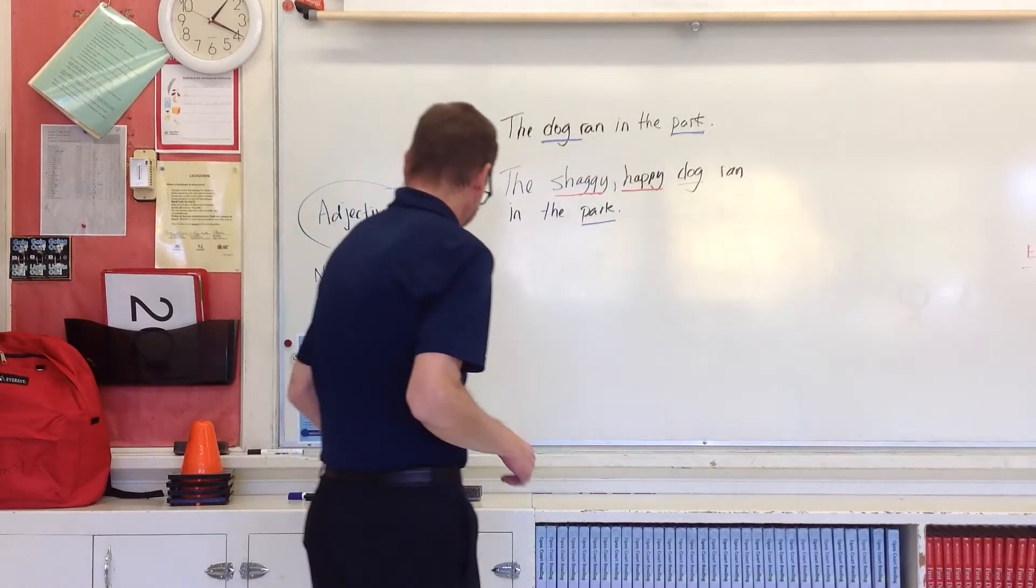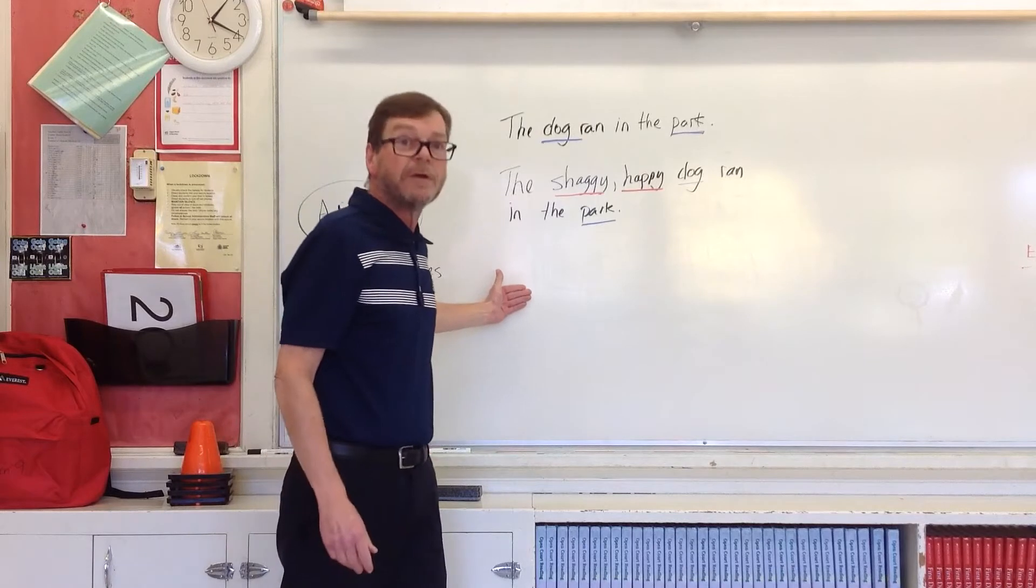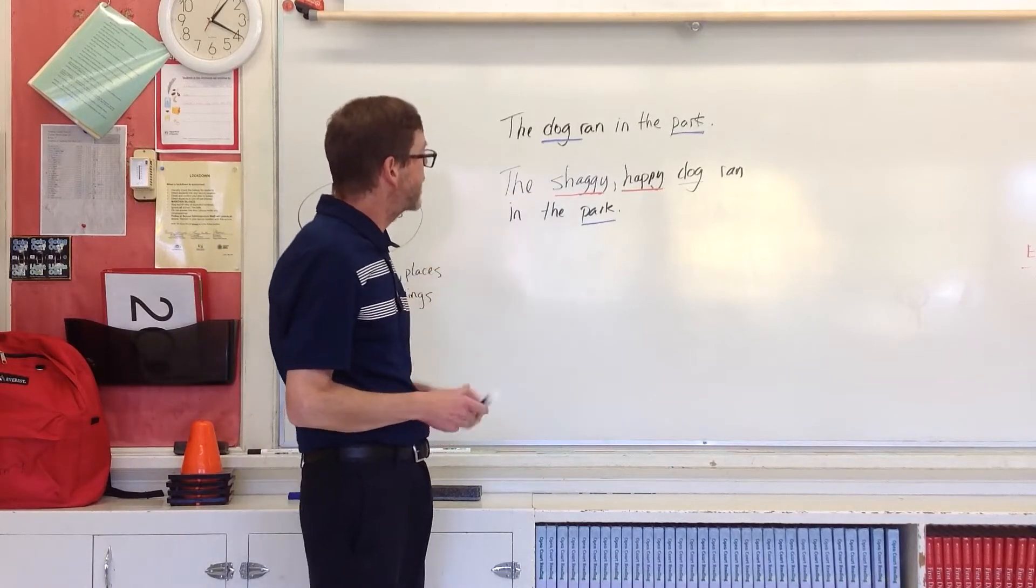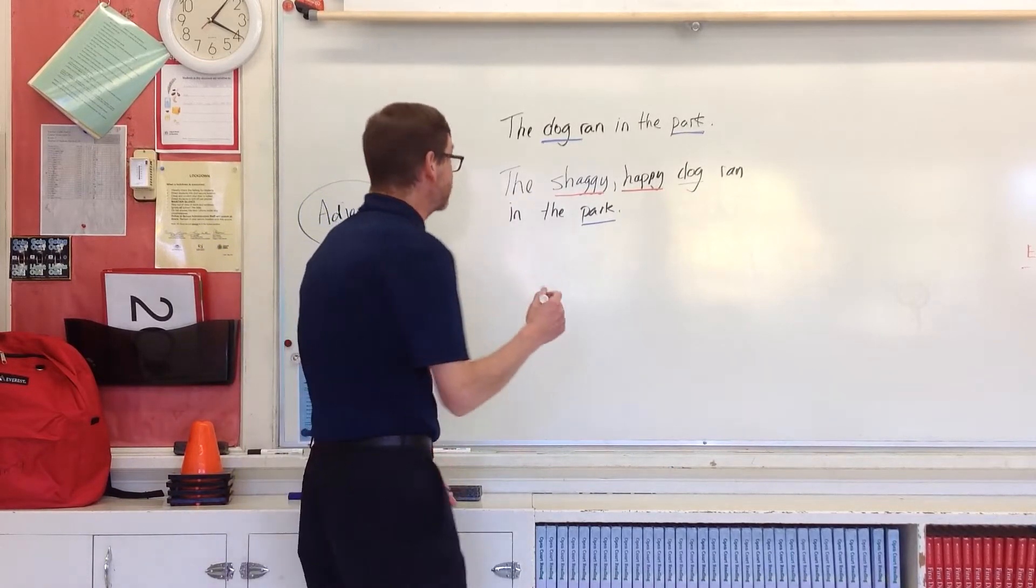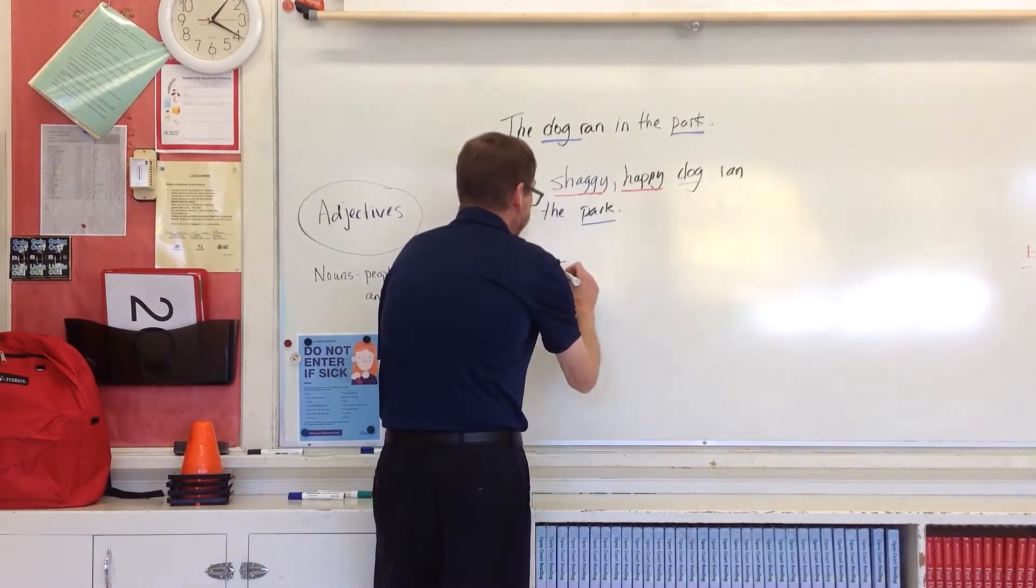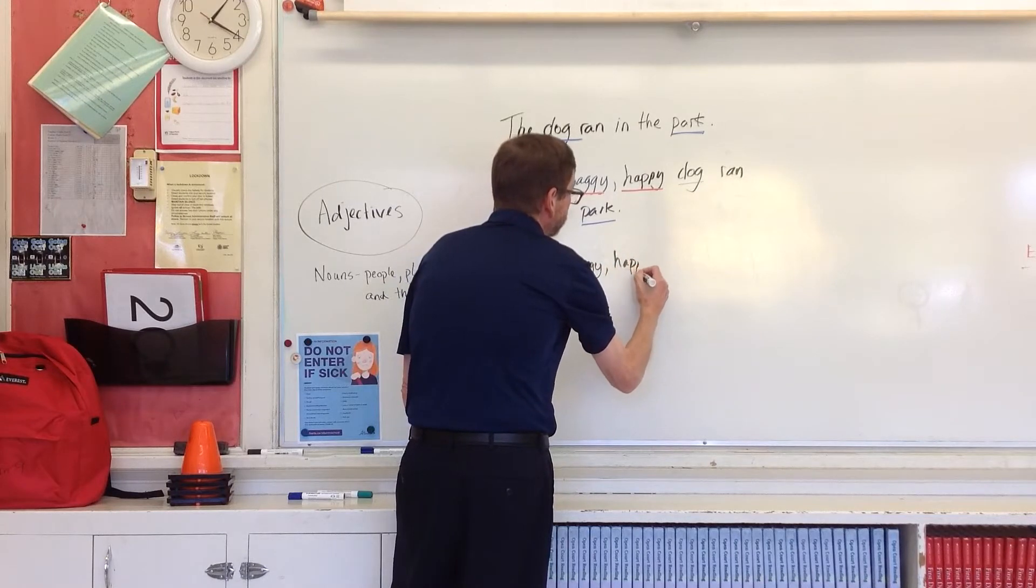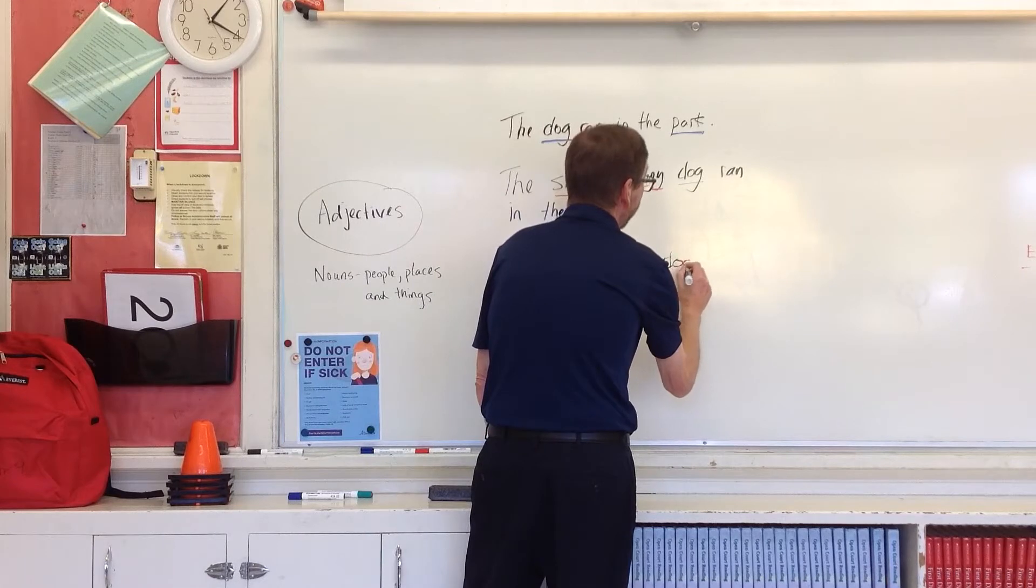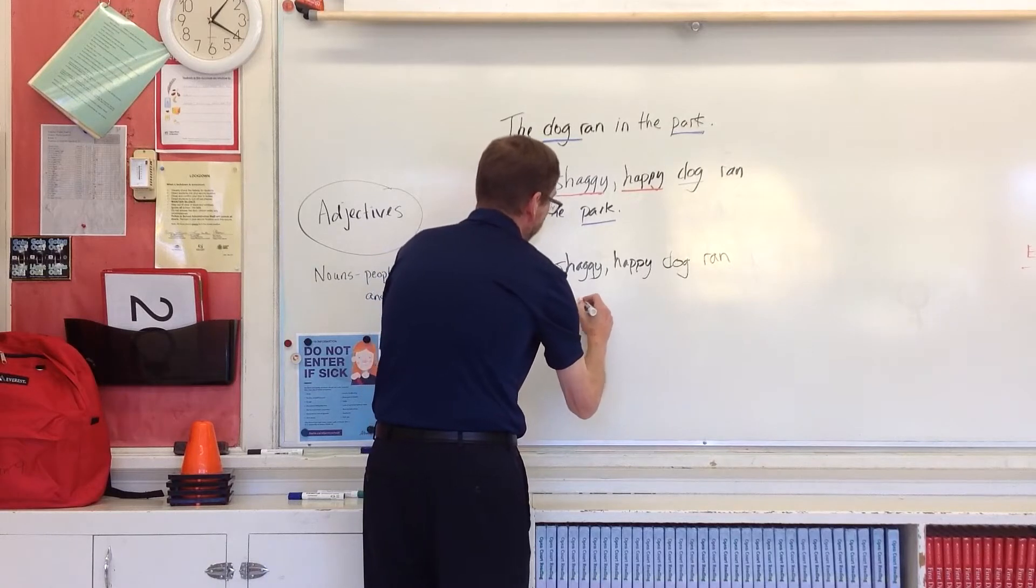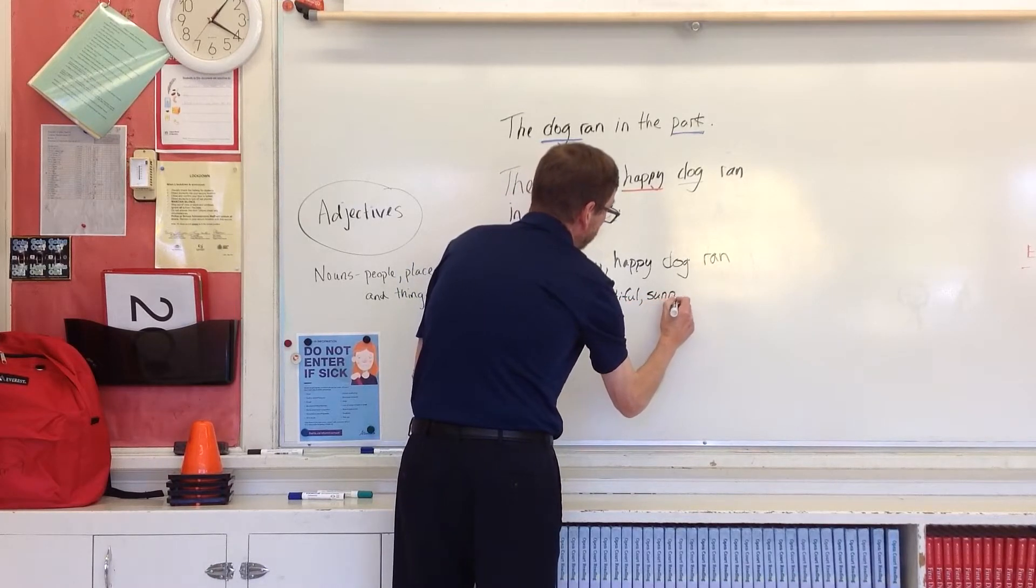So, now, I'm going to even make the sentence more descriptive. This is snoozeville. This is getting a little bit better, but we can even make it more impressive, more descriptive. Okay. So, now, excuse me, I'm going to think of two adjectives to describe the park. And I'm going to do it kind of as I'm writing. So, copy this sentence down, please. Copy all the sentences down as I go. So, the shaggy, there's our first adjective, happy, I like that one, dog ran in the beautiful, sunny park.